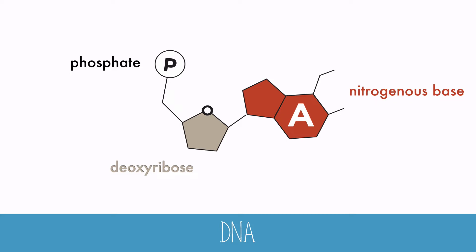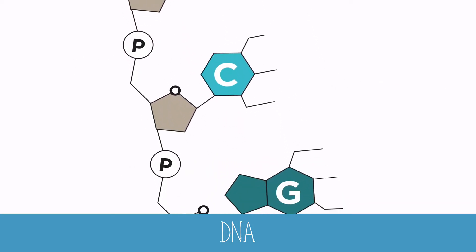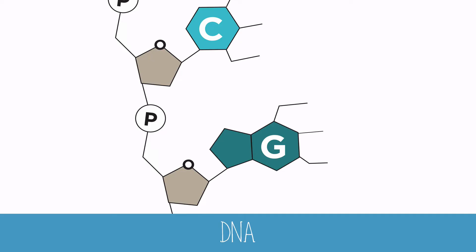The 5 carbon atoms of the deoxyribose sugar are numbered 1', 2', 3', 4', and 5'. Nitrogenous bases always attach to the 1' carbon, and phosphates attach at the 3' and 5' carbons of the sugar. Nucleotides can only be added at the 3' end of another nucleotide. Because of this, bases are added in the 5' to 3' direction of the DNA molecule.